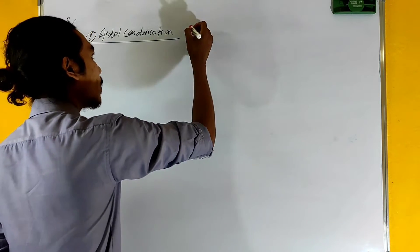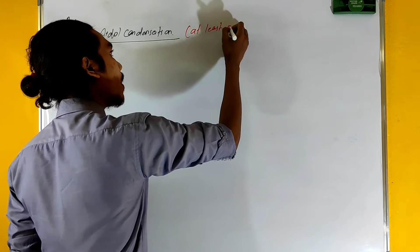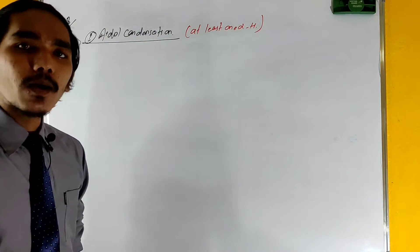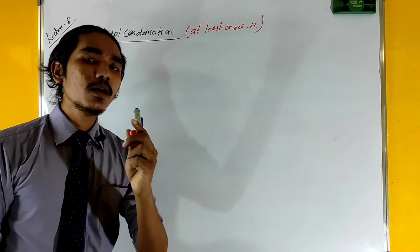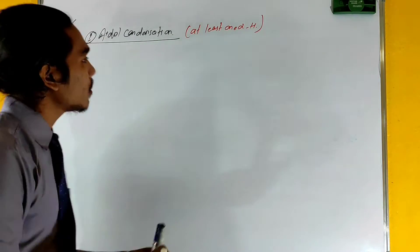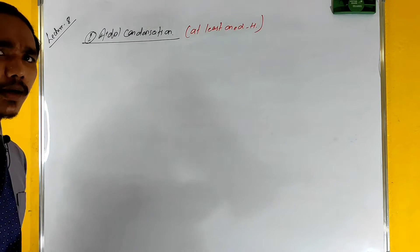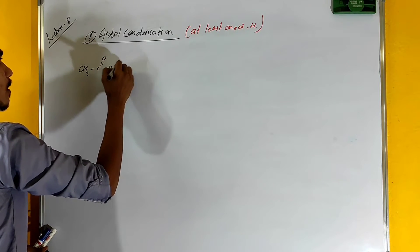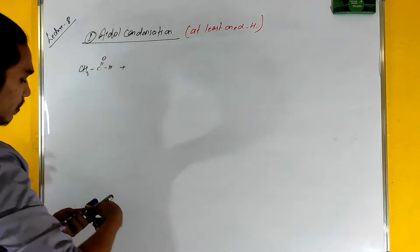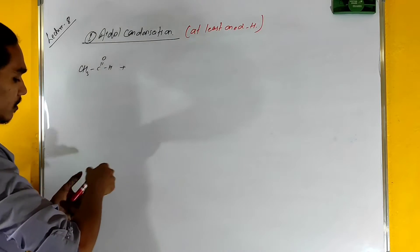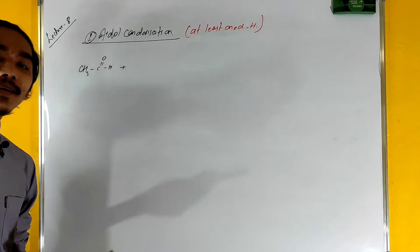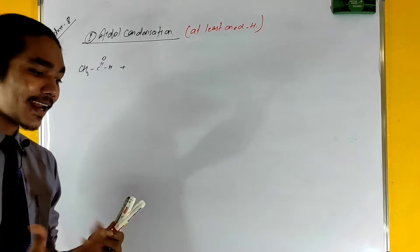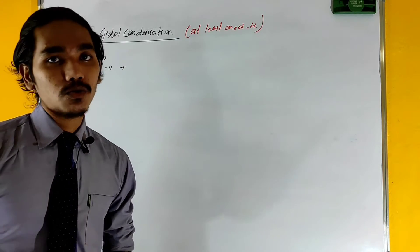Let's start our discussion. Aldol condensation requires at least one alpha-hydrogen compound — at least one alpha-hydrogen. Now, let's start our reaction. This is called an aldehyde, which is CH3C double bond H.